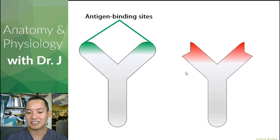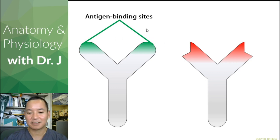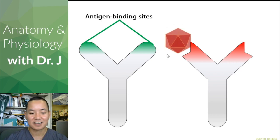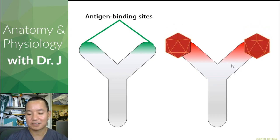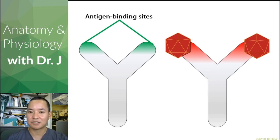So let's talk about antibodies briefly. This is a cartoon antibody. A typical antibody has two antigen binding sites. So if you have a viral protein, you're going to create antibodies against that viral protein so your immune system can attack and neutralize that virus as well.